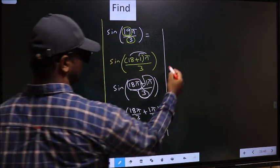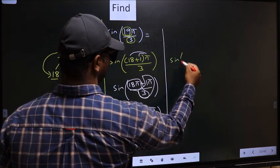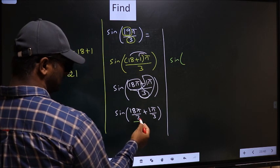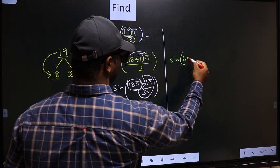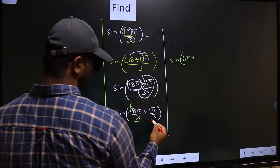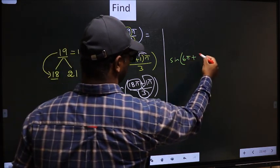Sin of 18π by 3, you cancel. 3 into 1 is 3, 3 into 6. So we get 6π plus this angle will remain like that only.